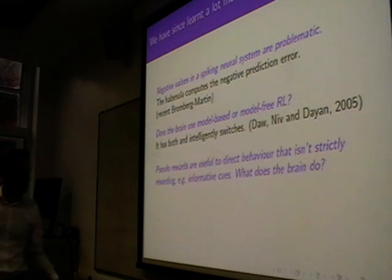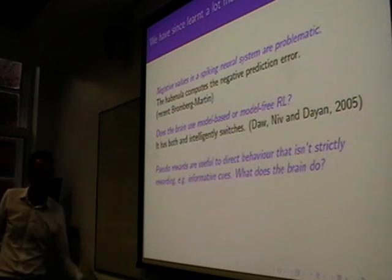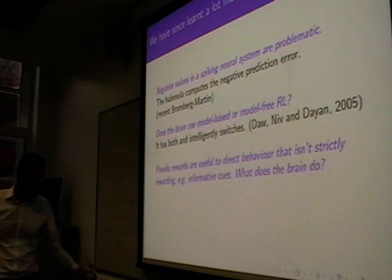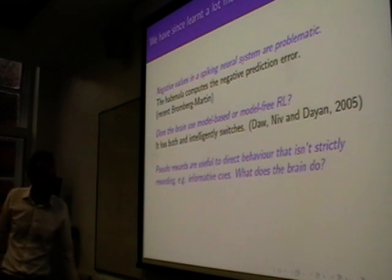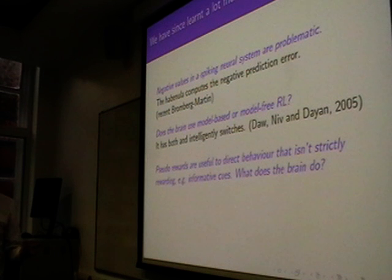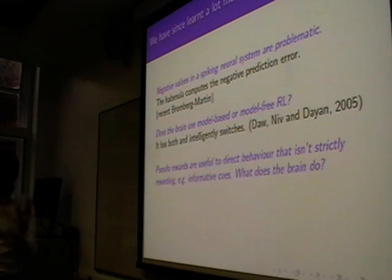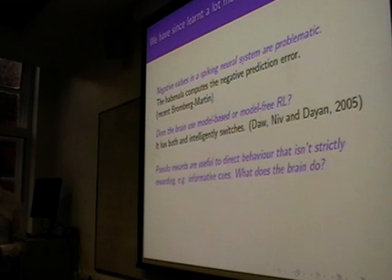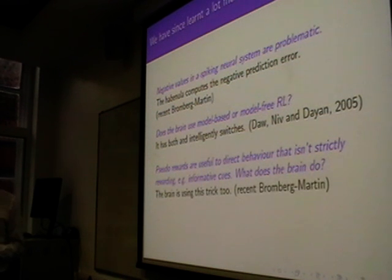Another trick we use in practice is pseudo rewards. For informative cues and things like that, we don't know if they'll associate with any reward in the future, but they could be useful. As a general heuristic, we might want to internally reward the system for doing that. It turns out the brain is using that trick too — it's stealing all our tricks.